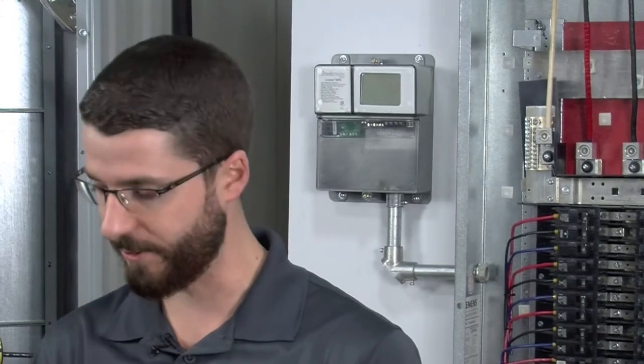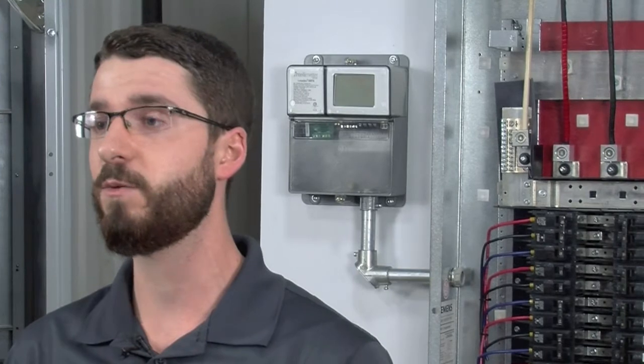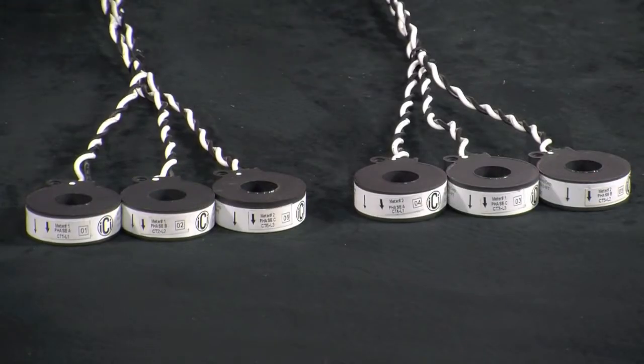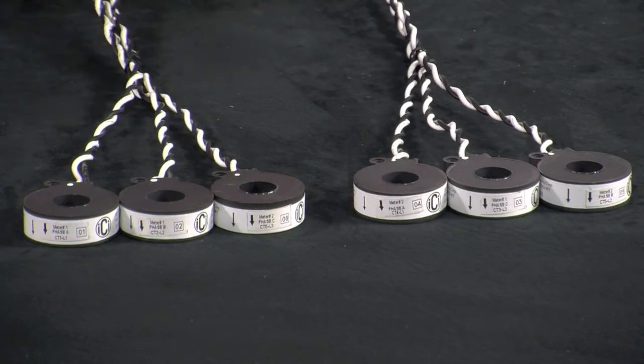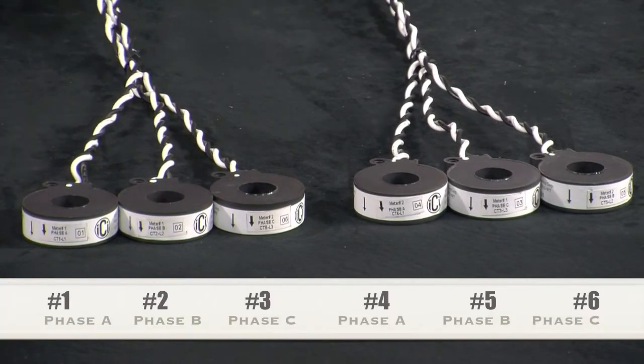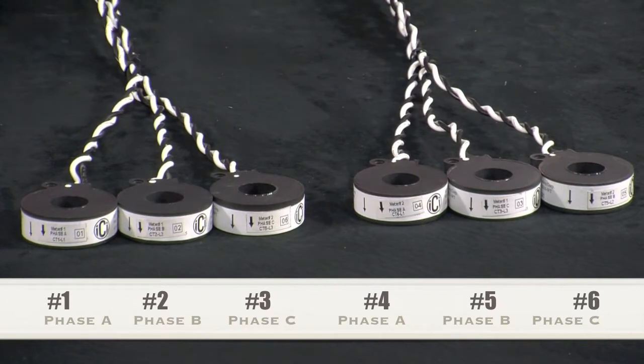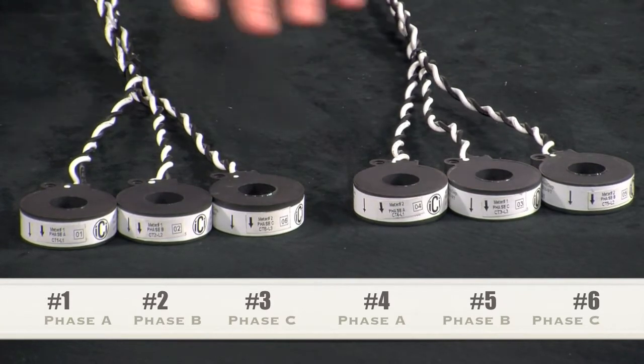Before we move forward with the installation of the CTs, let's just take a brief moment to go over some of the properties of the CTs themselves in relation to the MF6 meter. The MF6 meter is capable of both single-phase, two-phase, and three-phase metering. For the sake of this demonstration video, we are going to use three-phase metering with two metering points. So that being said, each CT is designated for a certain meter. CTs 1, 2, and 3 are for meter 1, whereas CTs 4, 5, and 6 are for meter 2.